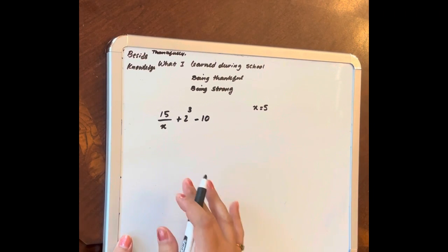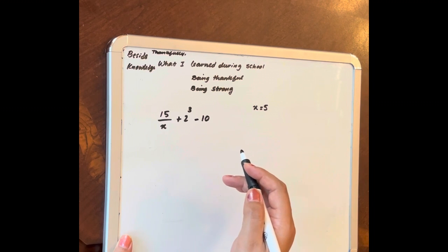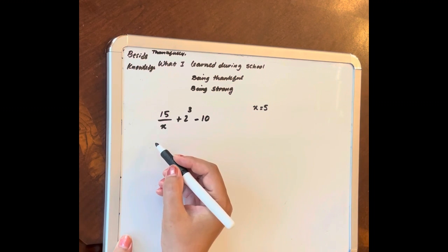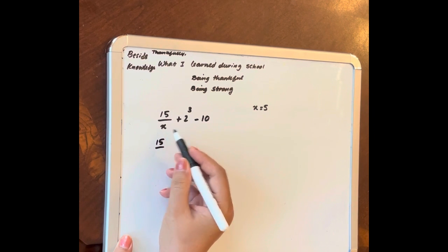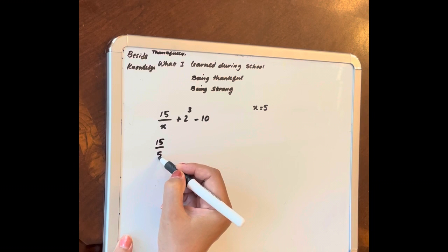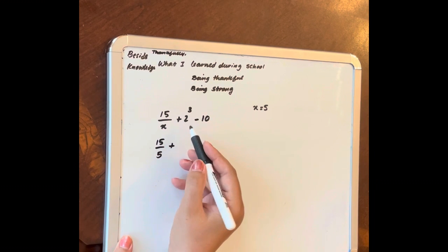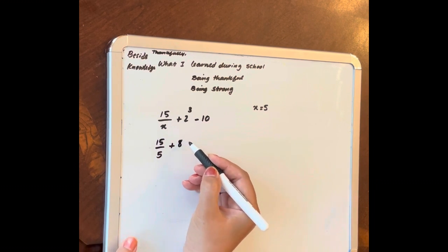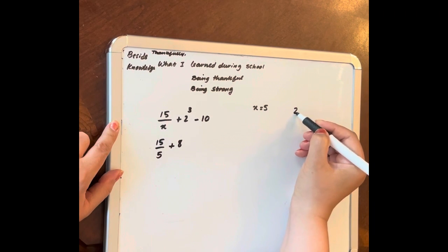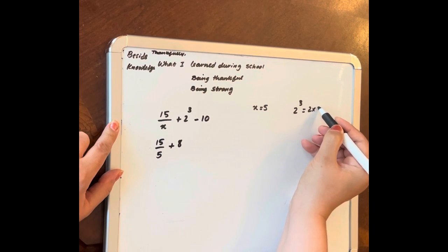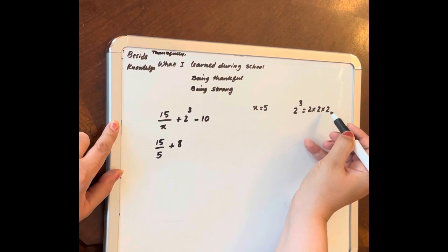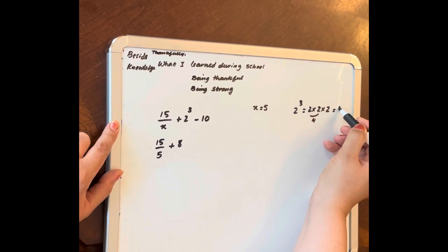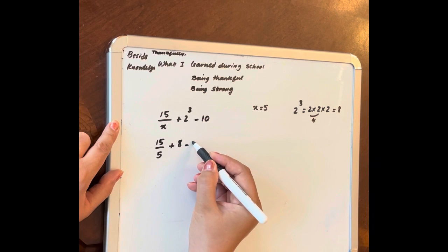Either they ask you to evaluate the expression or substitute. So 15 over x is 5 plus 2 to 3 is 8, because 2 to 3 is 2 multiply 2 multiply 2 three times, so it's 8. This is 4, 4 multiply by 2, minus 10.